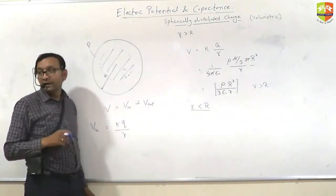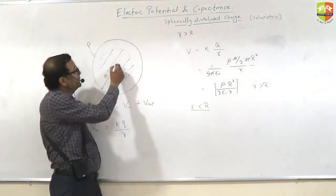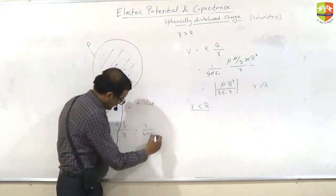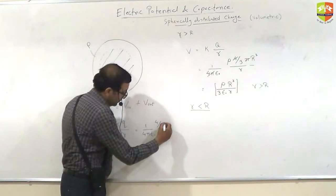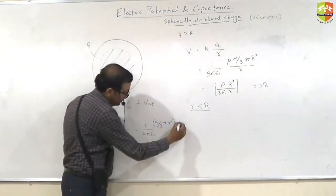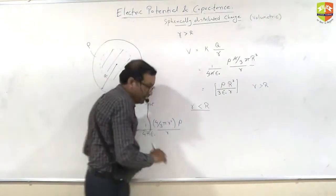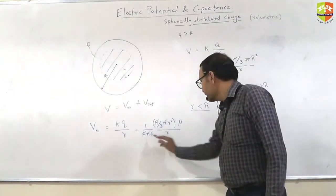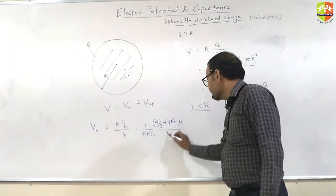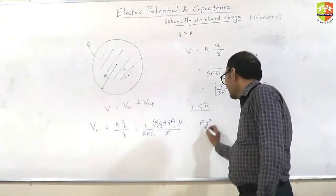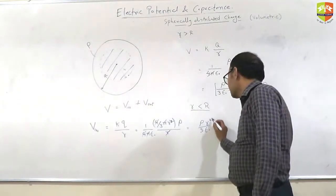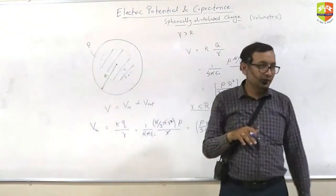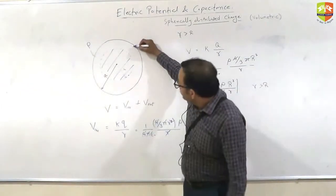The inner one will act as if it is a point charge located at the center, divided by small r. This entire sphere will behave like a point charge located in the center. So k is 1 by 4 pi epsilon 0, q is 4 by 3 pi r cubed this into rho divided by r. 4 pi cancel, this will be equal to rho r squared divided by 3 epsilon 0. This is the potential because of the inner sphere.